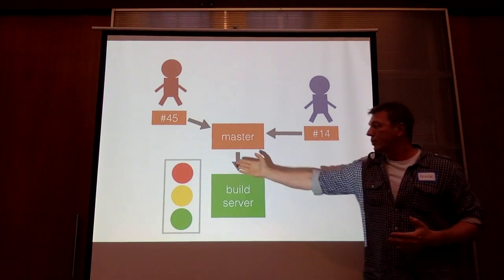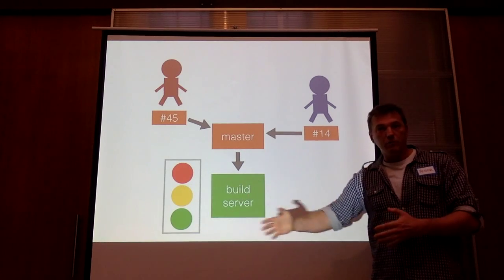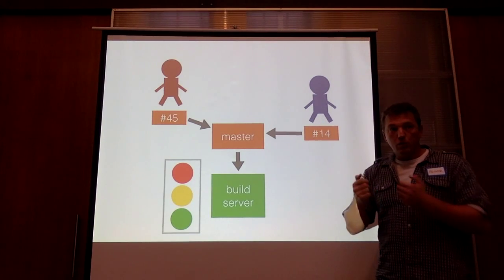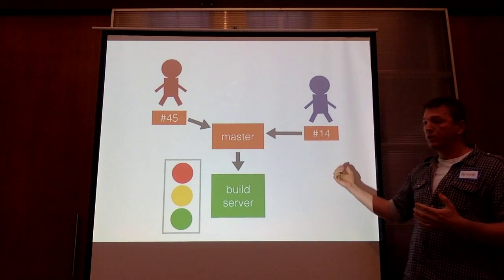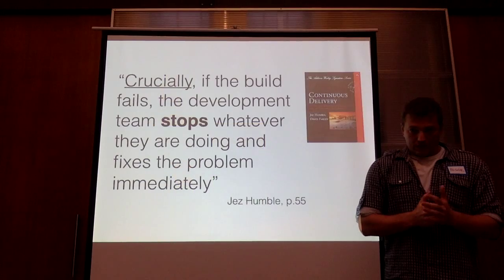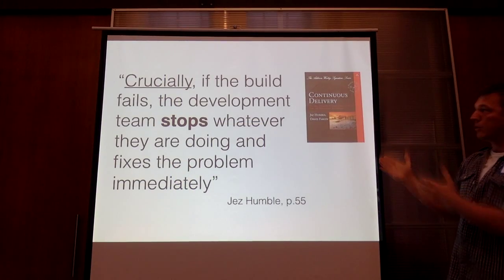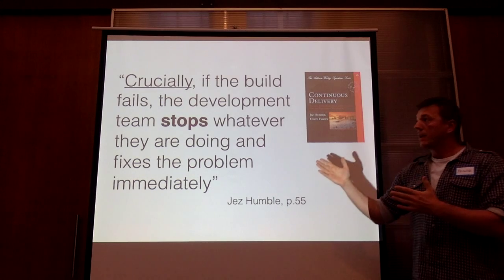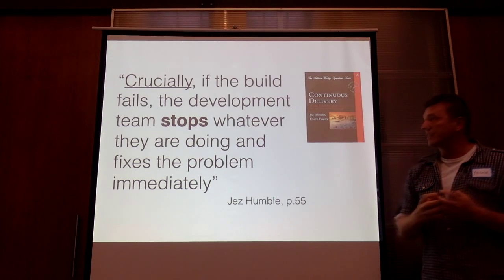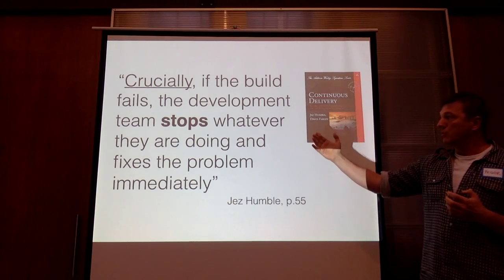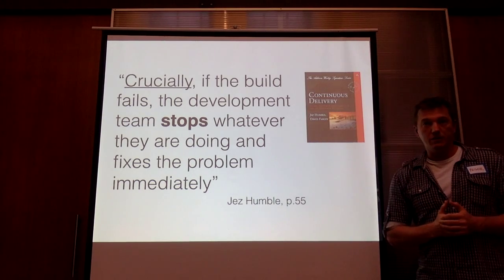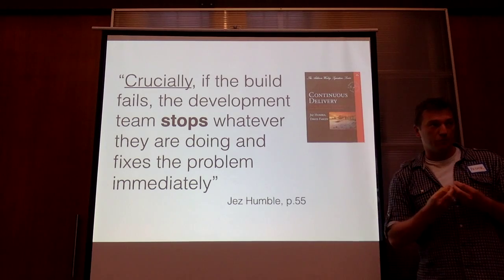We want to continuously receive one of three signals. The green one means everything is fine, we can continue. The red one means someone put something in that broke the whole result, and we need to stop together and do something about it. The famous book says crucially: if the build fails — if this build server gives the red signal — then the development team stops whatever we are doing and fixes the problem immediately. This is the fundamental, crucial concept of continuous integration.